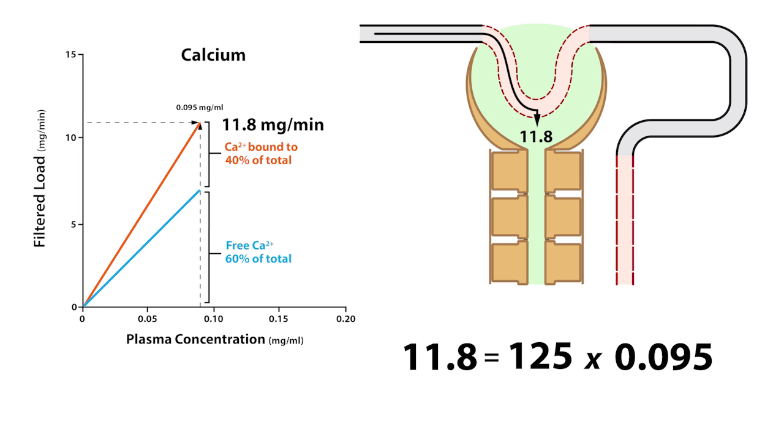So, the best way to answer this question is to use the filtered load for total calcium, which is 11.8 milligrams per minute, then multiply that value by 60%, which is the filtratable portion of calcium.